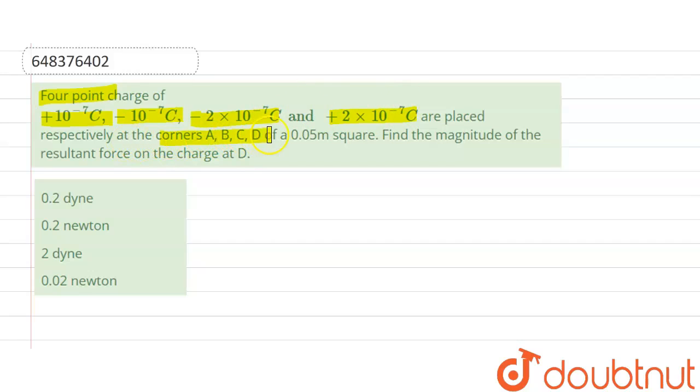respectively at the corners A, B, C, D of a 0.05 meter square. Find the magnitude of the resultant force on the charge at D. Options are 0.2 dyne, 0.2 newton, 2 dyne and 0.02 newton.